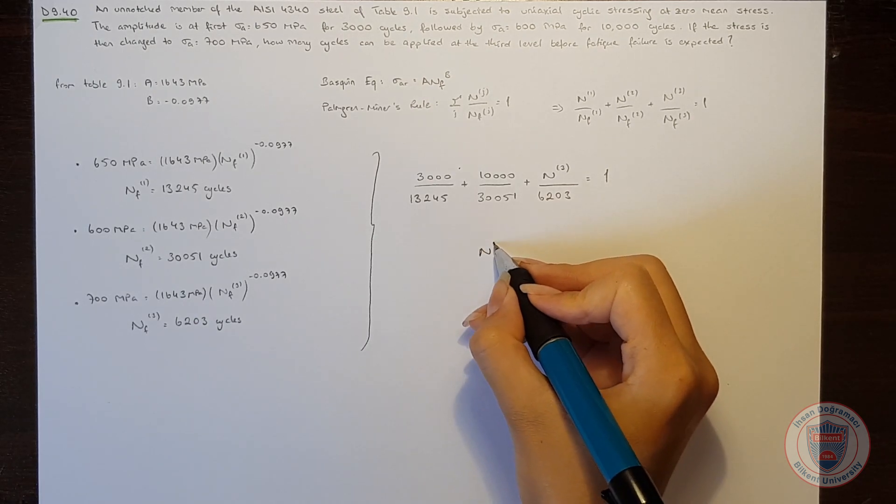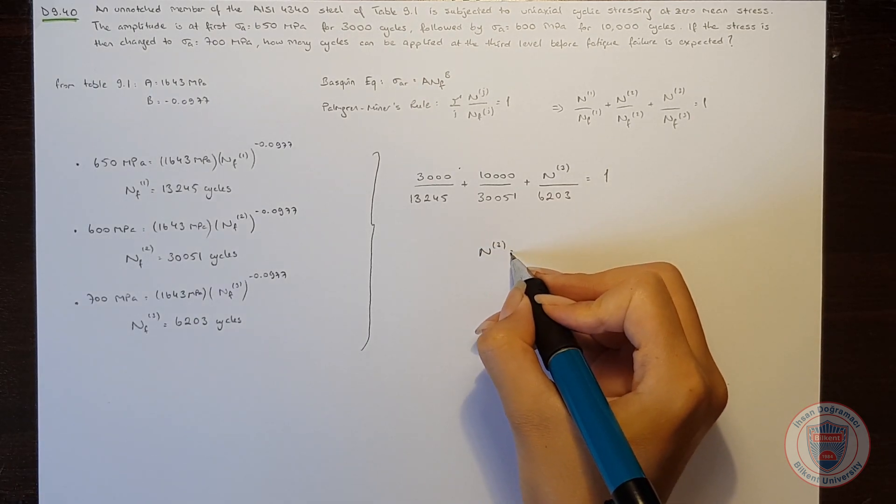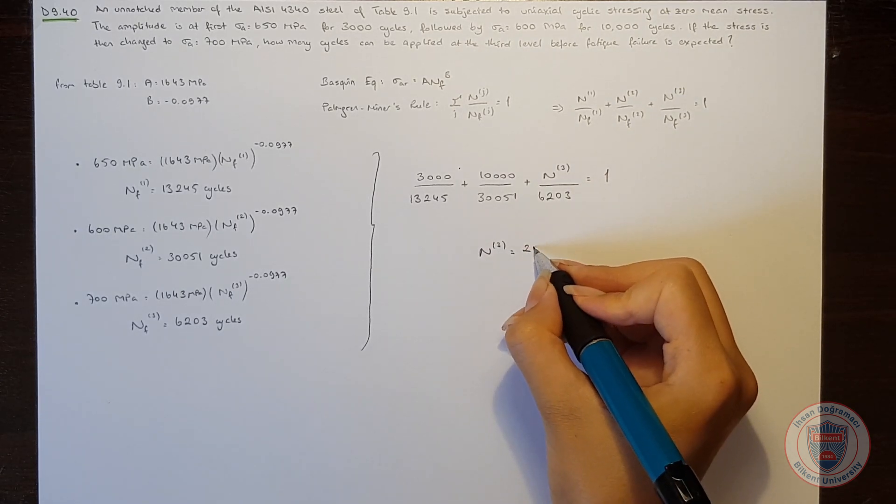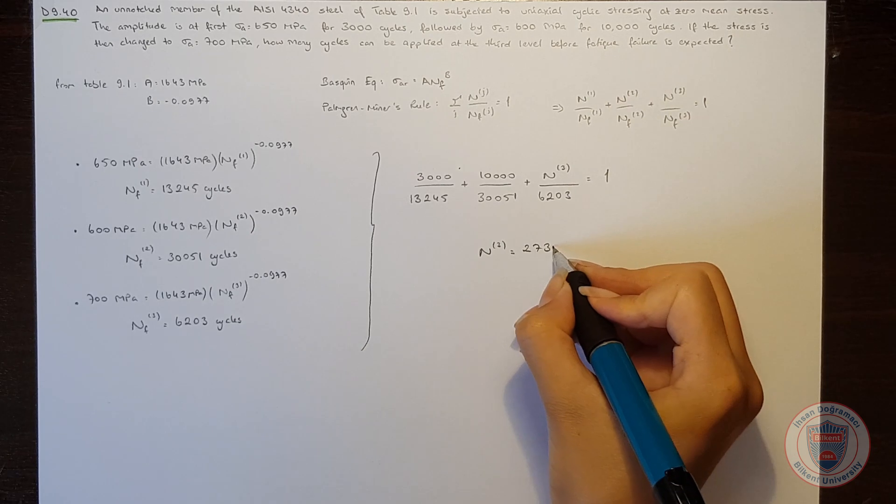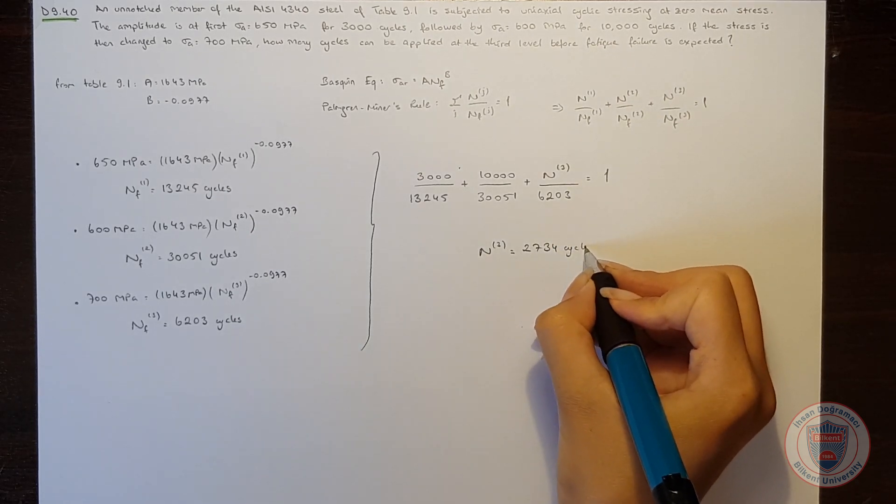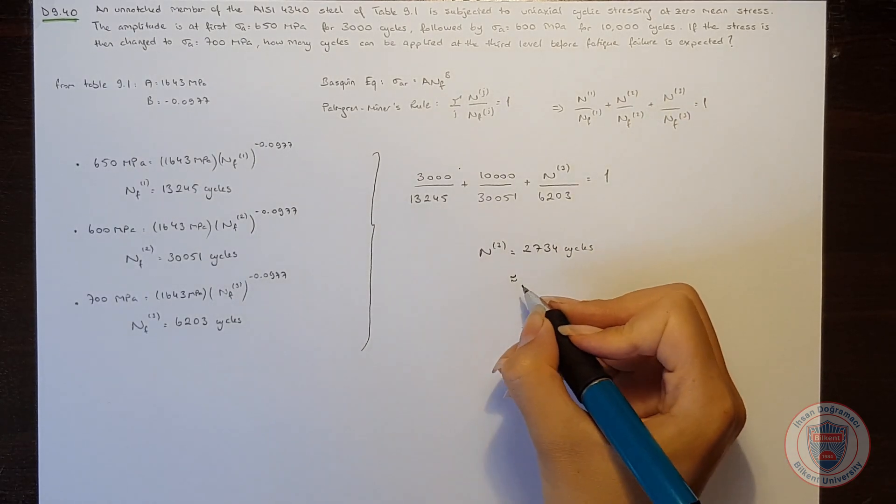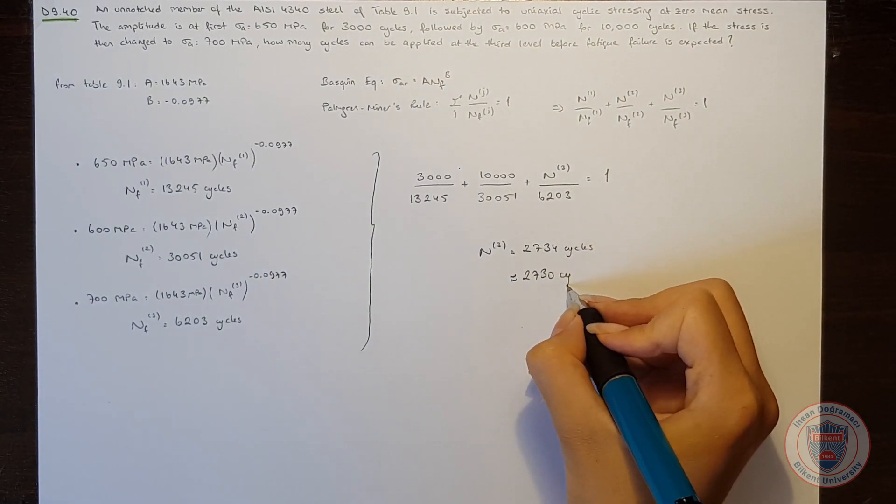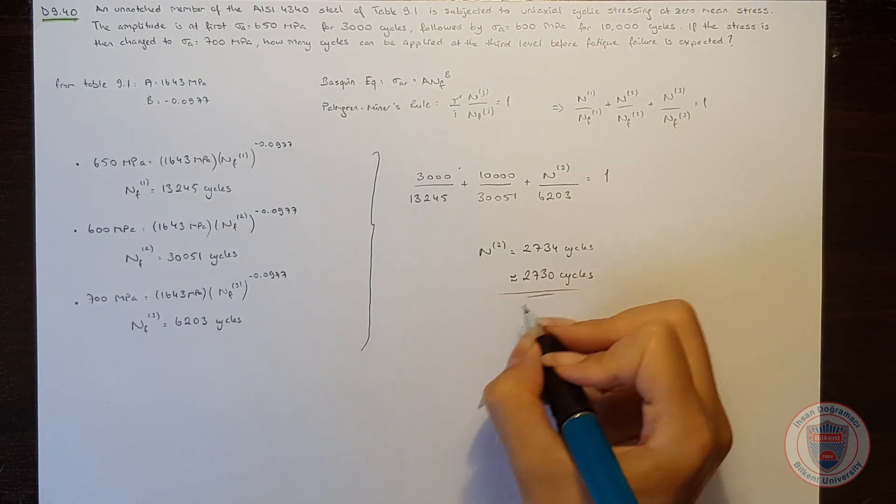So we can obtain the number of cycles at the third level as 2734, and we can say that it is approximately 2700.